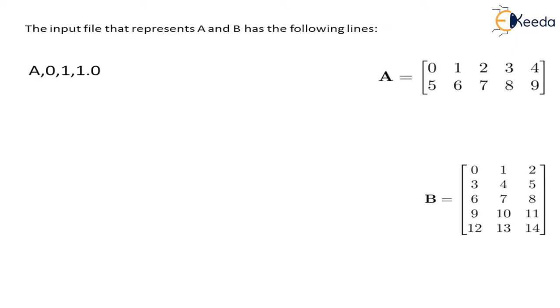The next is 2. The position of 2 is 0,2. So matrix name is A,0,2,2.0. Next element is 3, position is 0,3, so we write A,0,3,3.0. Same for the fourth element: A,0,4,4.0.